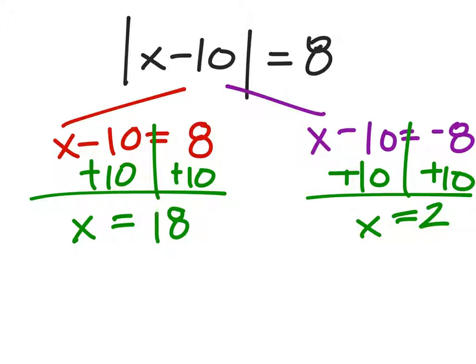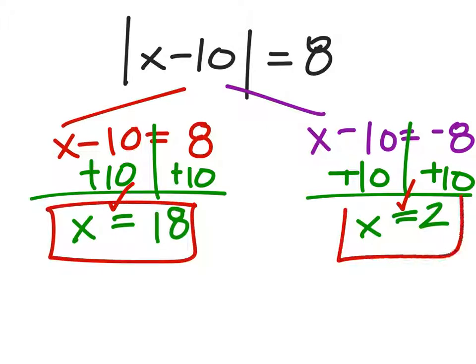Those are the two solutions. You'd want to check: 18 minus 10 is 8, and the absolute value of 8 is 8 — that checks out. And 2 minus 10 is negative 8, the absolute value of negative 8 is 8 — that checks out as well. Both answers are correct.